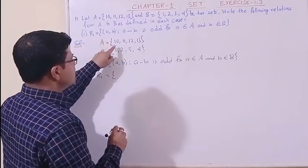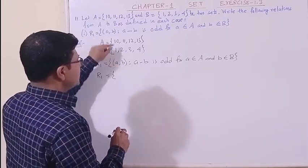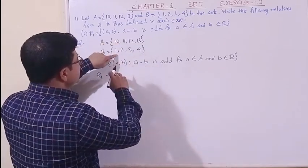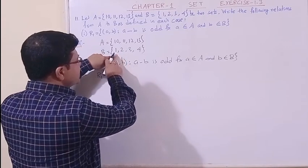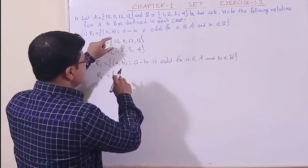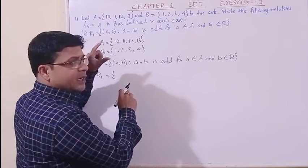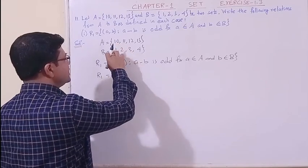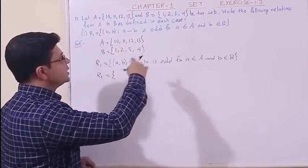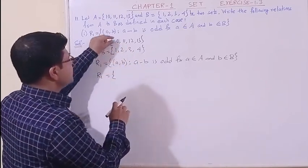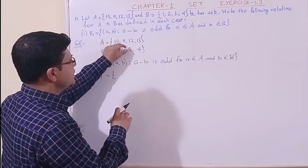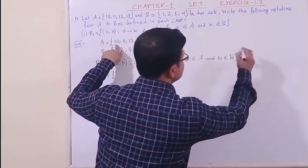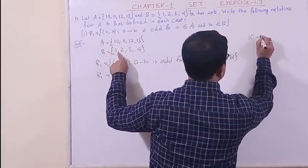Let us write down here. I will make ordered pairs such that a minus b, where a is the element of the first set and b is the element of the second set. So the first component is the element from A and the second component is from B. Let us check the difference a minus b. Let us proceed. So 10, if we fix it, 10 minus 1.